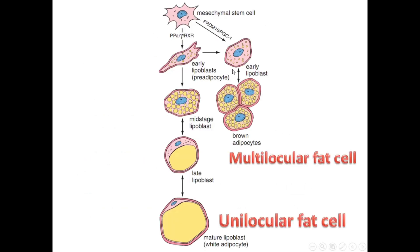Like other connective tissues, adipose tissue also originates from mesenchymal tissue. You can see here the mesenchymal stem cells differentiate into adipose cells or adipocytes, creating two kinds of adipose cells.